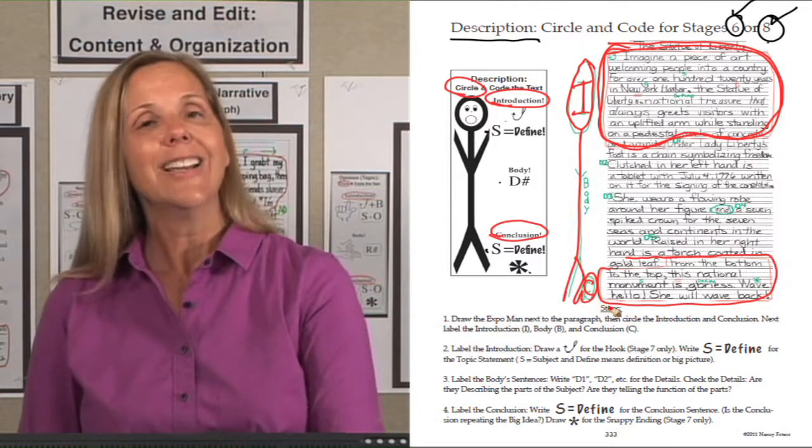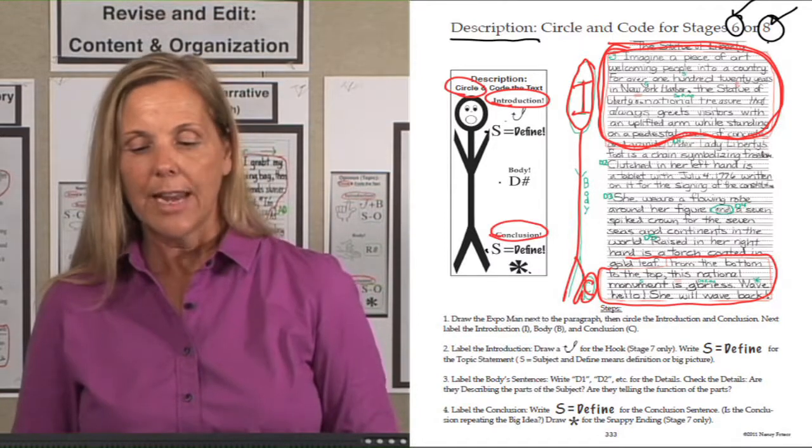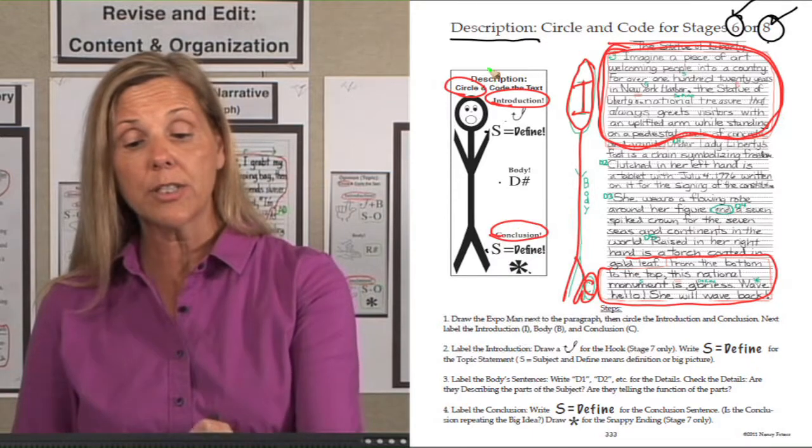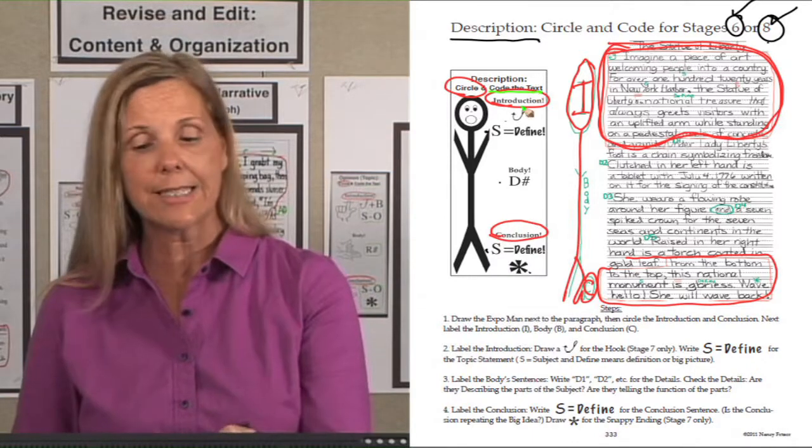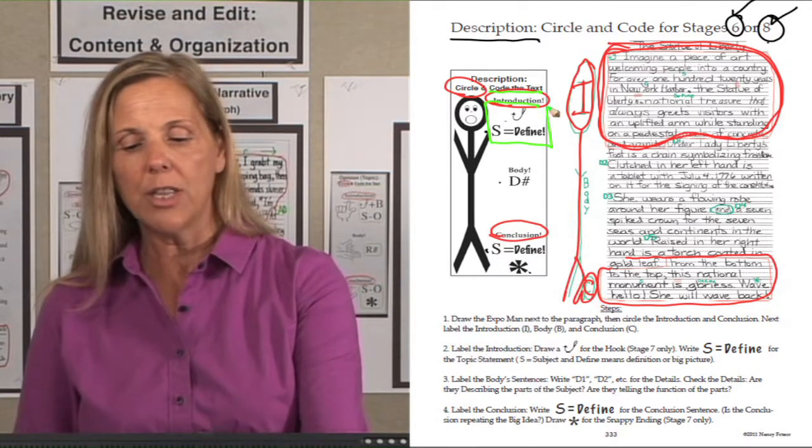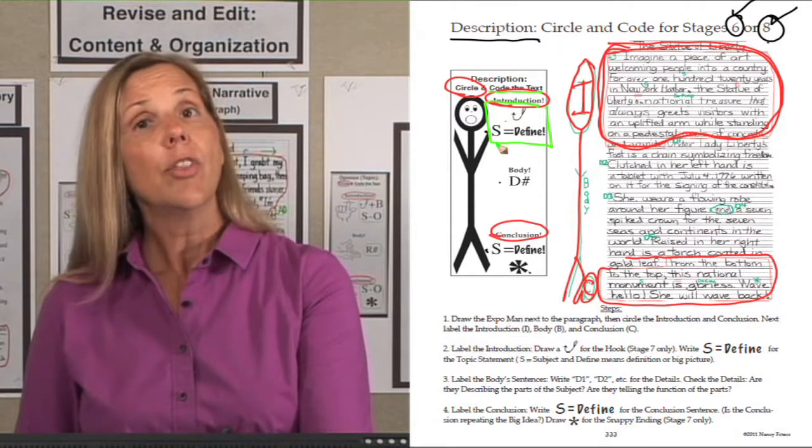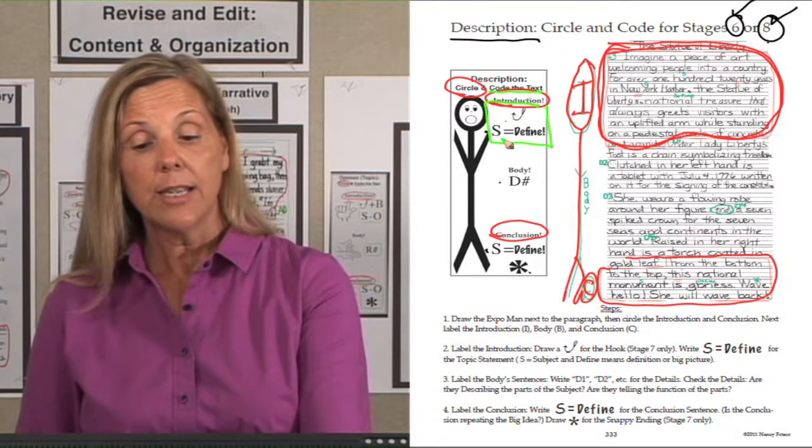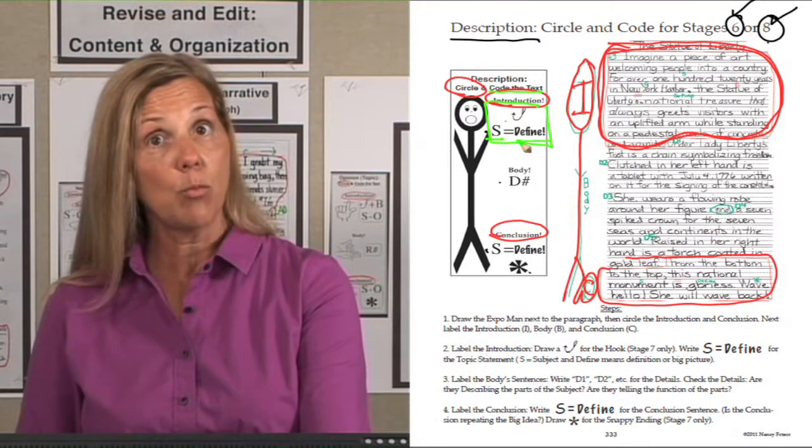and a C on the foot to label the parts. After we circled the parts, then we went back to code the text. They went and coded the hook, the topic sentence, which was say the subject and define it with a definition.